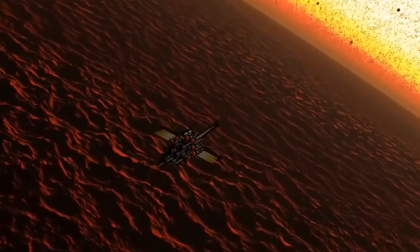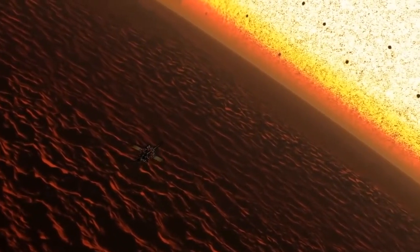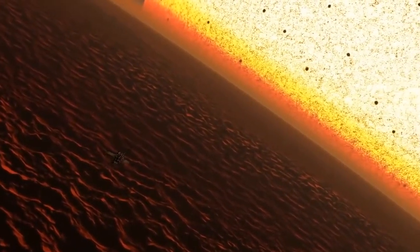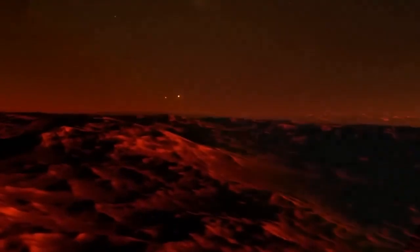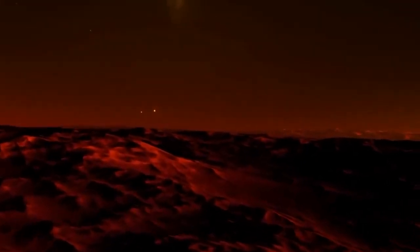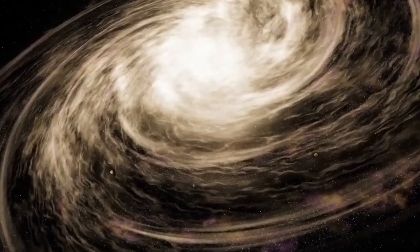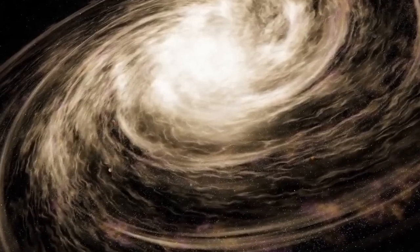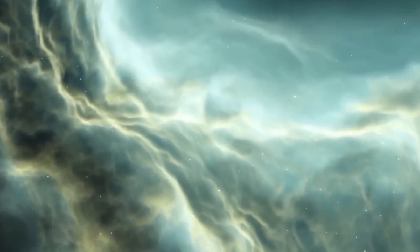HD-189733b. HD-189733b is a K-type star orbiting gas giant exoplanet. It has a mass of 1.13 Jupiters, completes one orbit of its star in 2.2 days, and is 0.0313 AU away. The planet's cobalt blue color is caused by a hazy, blue torch atmosphere with glass-laced clouds. Stormy winds whip the shattered glass sideways at 5,400 mph or 2 km per second, sending it spinning in a sickening spiral.